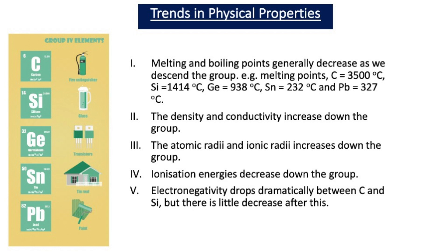As we go down group 4, density and conductivity increase. The increase in conductivity is unsurprising since metals at the bottom of the group have good conducting properties. The atomic radius is half the distance between the nuclei of two adjacent atoms, and the ionic radius is half the distance between the nuclei of two adjacent ions. Both increase down the group because there are more filled shells, more shielding, and less pull from the nucleus.